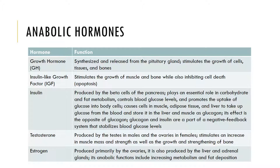Insulin does the opposite of glucagon and is produced and released by the beta cells of the pancreas, and plays an essential role in carbohydrate and fat metabolism. Testosterone and estrogen are two of the reproductive hormones. Testosterone is produced by the testes in males and the ovaries in females, and can stimulate an increase in secondary sex characteristics like muscle mass and strength in bones in men.